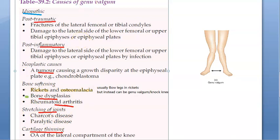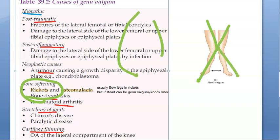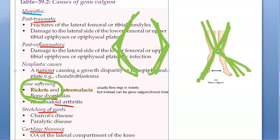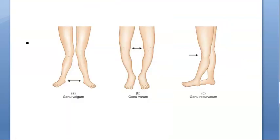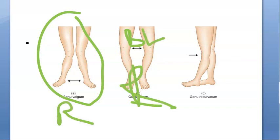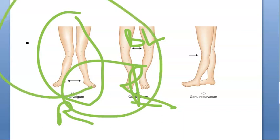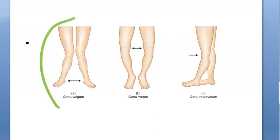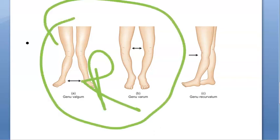Rickets also can cause genu valgum. You should understand that in rickets you can also have bow legs — genu varum. Both you can have in rickets. That is what is strange. But the word rickets mainly refers to bow legs. So in this video we are looking at genu valgum, and genu varum is the bow legs you see in rickets mainly. Rickets can cause both of these conditions — it can cause knock knees or bow legs.